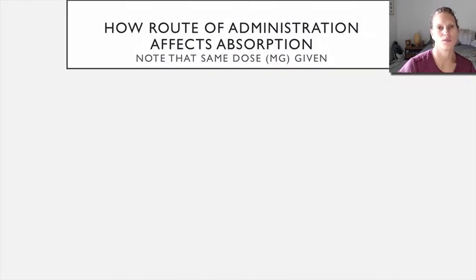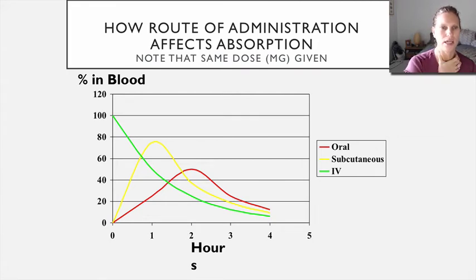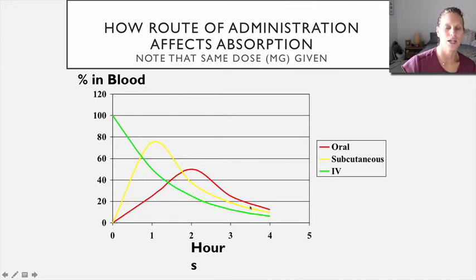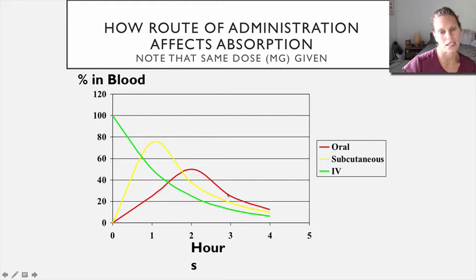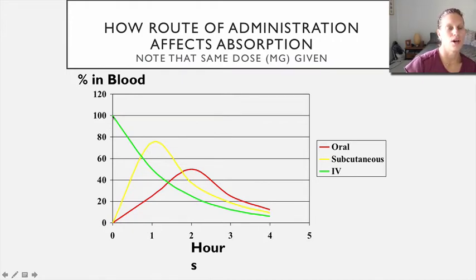These routes don't all absorb at the same rate. In this graph, three different routes of administration are shown. Oral administration is the red line — at time zero there's zero percent in the blood, it slowly climbs, peaks, then declines. Subcutaneous injection climbs up faster, you absorb more of it and get more into the blood. IV administration starts at 100% and then declines, since you're putting it directly into the bloodstream.